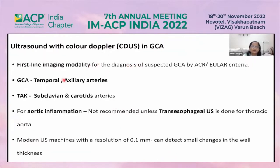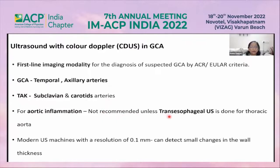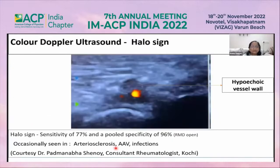Ultrasound with color Doppler is the first-line imaging modality for the diagnosis of giant cell arteritis according to current ACR and EULAR criteria. For GCA, we should look at the temporal and axillary arteries; for Takayasu, subclavian and carotid arteries are more commonly affected. Aortic inflammation assessment by color Doppler is not recommended unless using transesophageal ultrasound.